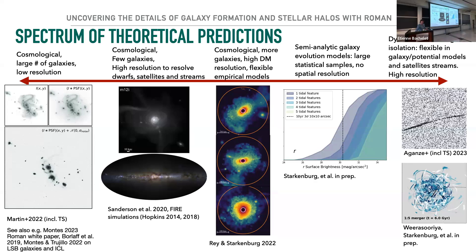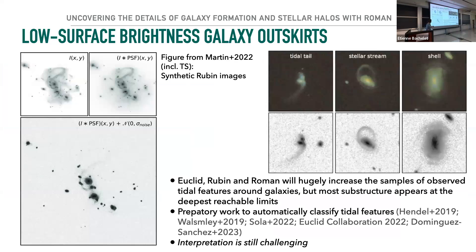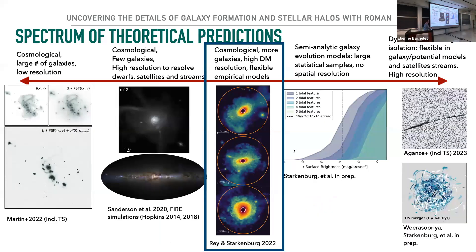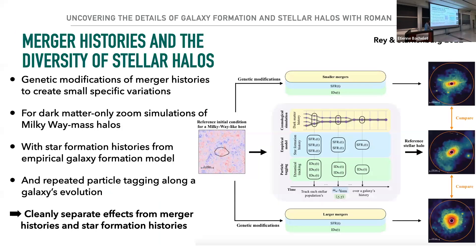At the large-scale structure level, these are synthetic observations for Rubin, which will observe many galaxies in integrated light. People have been working to classify tidal features and characterize what all these instruments will see. But the interpretation — what does it mean for our theories — is still very challenging.